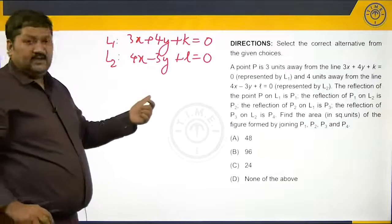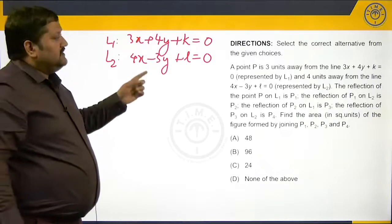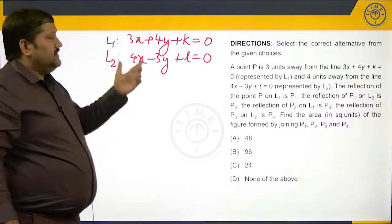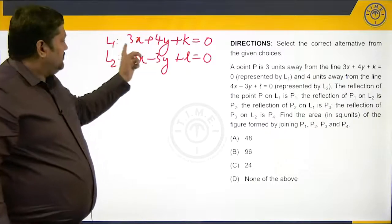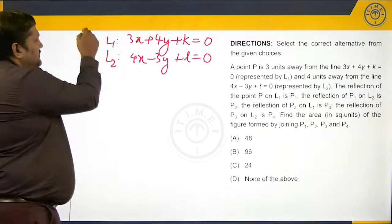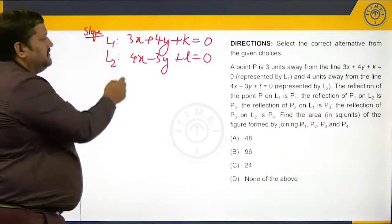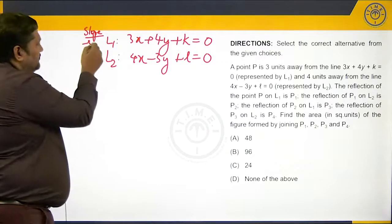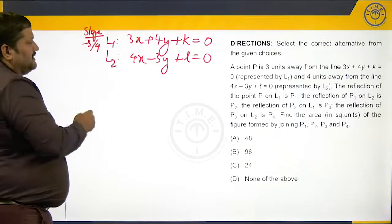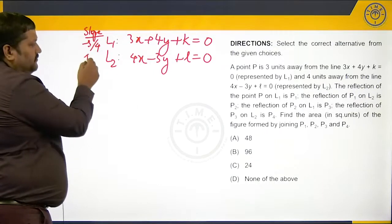The first thing we can analyze is that line 1 and line 2 are perpendicular lines. Why are they perpendicular? Because the slope of line 1 is minus 3/4, and the slope of line 2 is 4/3.